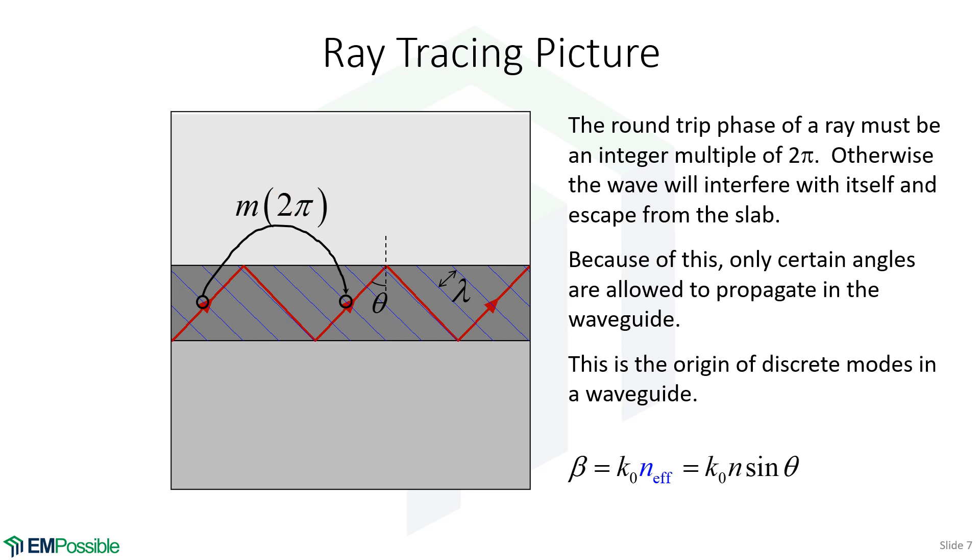The amount of phase it accumulates from one point to an equivalent point has to be an integer multiple of 2π. There has to be an exact integer number of wave cycles from here to here. Otherwise, this ray would become out of phase with other rays and they would interfere, causing the wave to escape from the waveguide. This is the origin of there being only discrete modes allowed inside a waveguide.